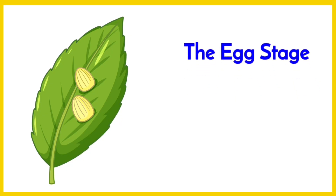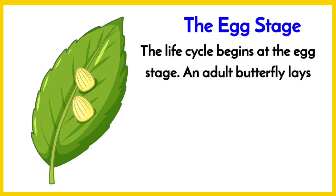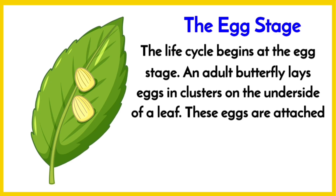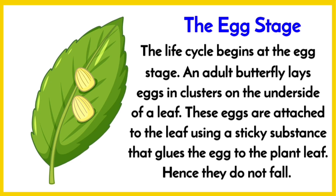Starting with the first stage — the egg stage. The life cycle begins at the egg stage. An adult butterfly lays eggs in clusters on the underside of a leaf. These eggs are attached to the leaf using a sticky substance that glues the egg to the plant leaf, so they do not fall.